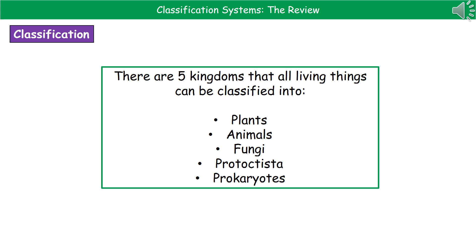If we look at one of those sections of classification — the kingdoms — every single living thing on planet Earth can be divided into one of five kingdoms: plants, animals, fungi, protoctista, or prokaryotes.